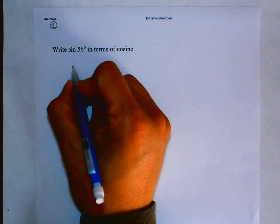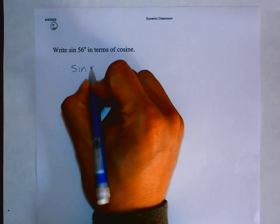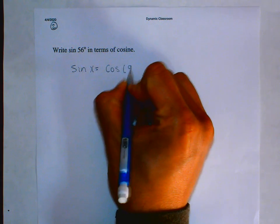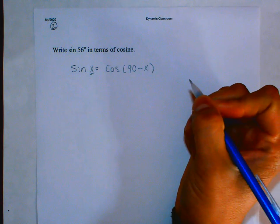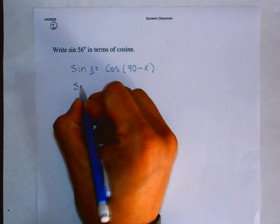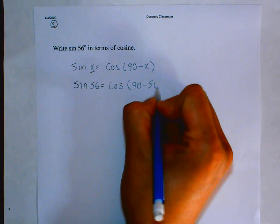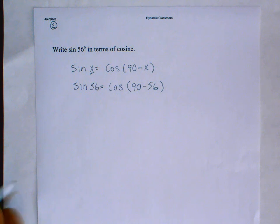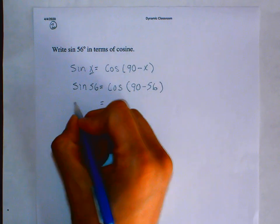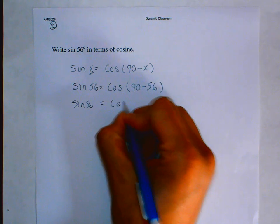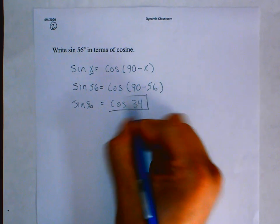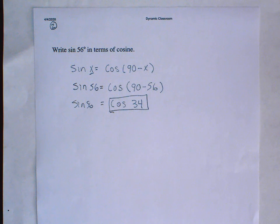For example number two, they want us to write the sine of 56 in terms of cosine. We learned that you can write the sine of any angle in terms of cosine by simply subtracting that angle from 90 degrees. So the sine of 56 is equal to the cosine of 90 minus 56, which is the cosine of 34. The sine of 56 equals the cosine of 34 — that's what you type in. Pretty cool and very easy too.